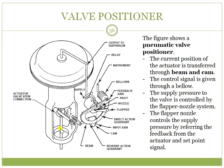The actuator-to-valve stem connection shows the current position of the valve. If the valve goes down, the whole link will go down. This connection is through the beam and cam.